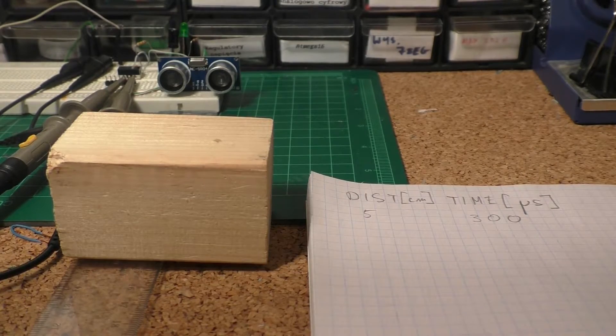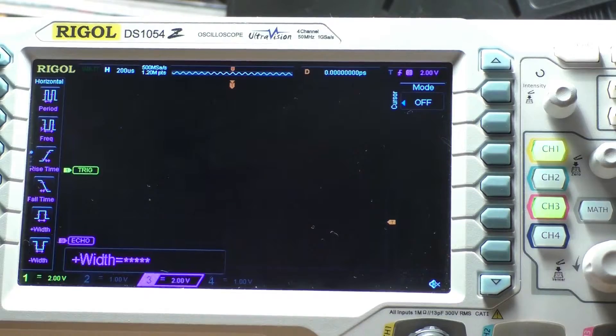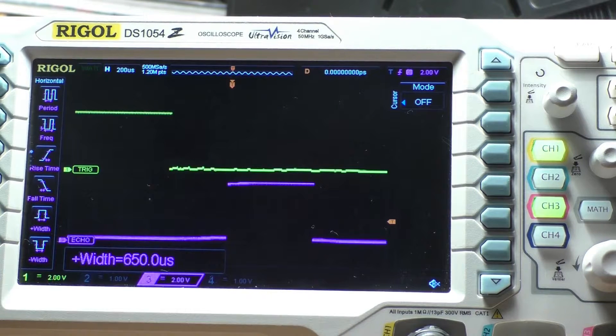Now the block is placed at 10 cm from the sensor. Let's trigger the sensor and we can see that the time is around 650 microseconds.